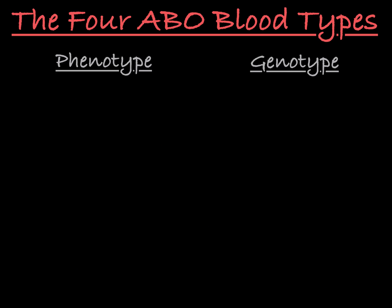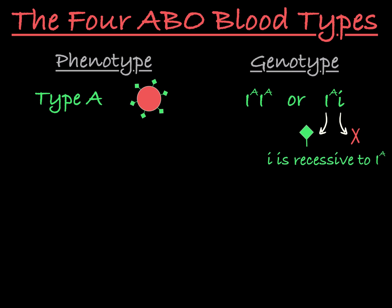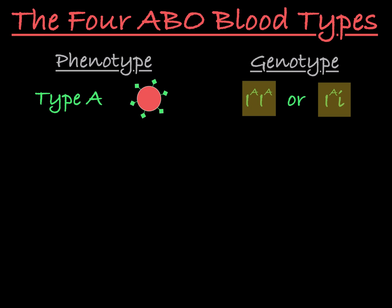The first blood type we'll look at is type A blood. This blood contains red blood cells with only type A antigens on their membranes. A person who is homozygous IA will only produce enzymes that build type A antigens, resulting in type A blood. A person who is heterozygous, containing one IA allele and one little i allele, will also only make type A antigens. In this case, the little i is recessive to the IA allele, and both of these genotypes result in the same phenotype of type A blood.